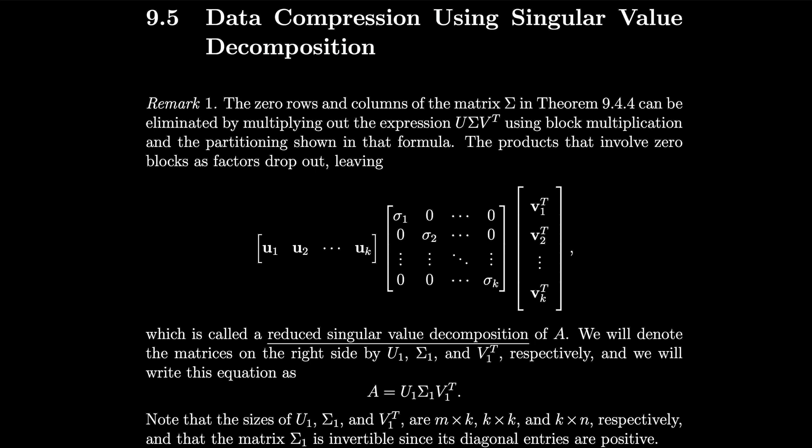We will denote the matrices on the right side by U₁, Σ₁, and V₁ᵀ, respectively, and we will write this equation as A equals U₁ Σ₁ V₁ᵀ.